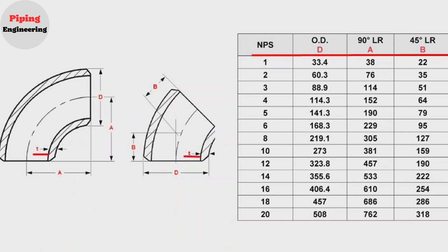We can see in the table that the outside diameter of the 1 inch pipe is 33.4 mm. The size of 90 degree elbow is 38 mm. The size of 45 degree elbow is 22 mm.